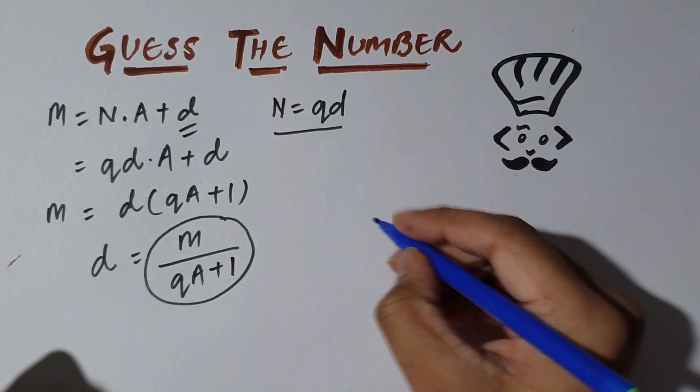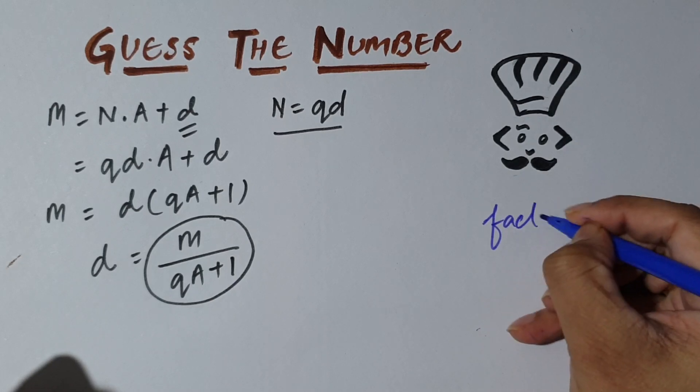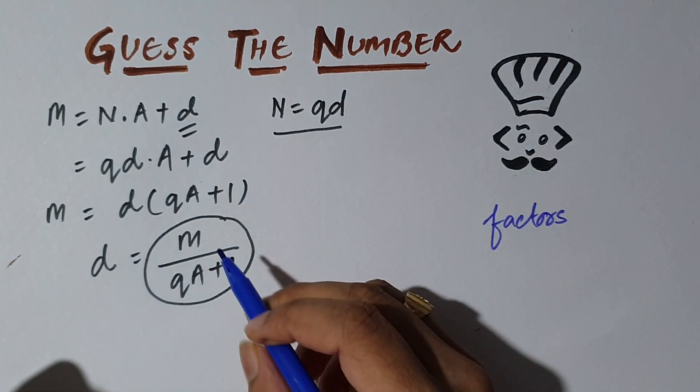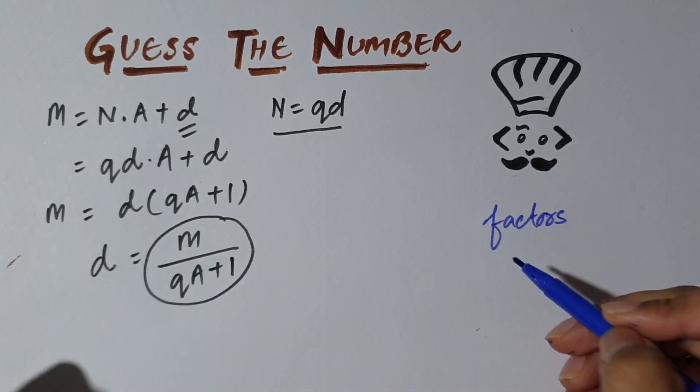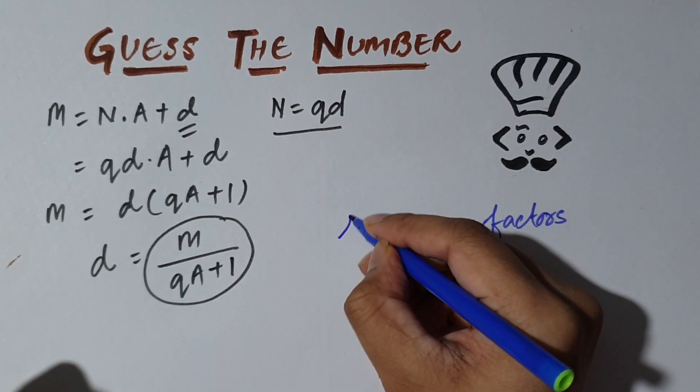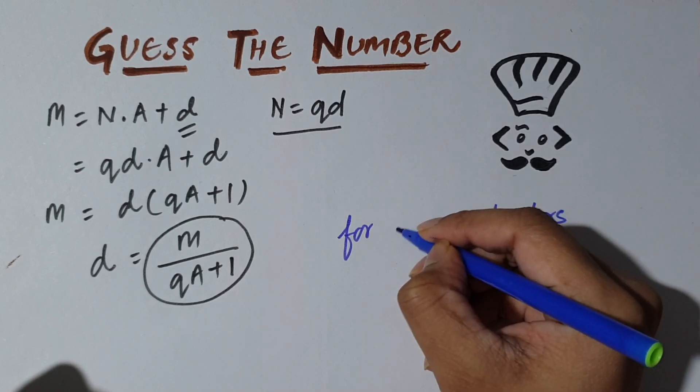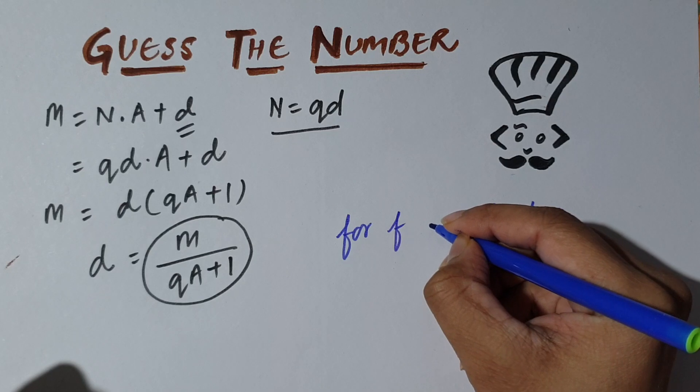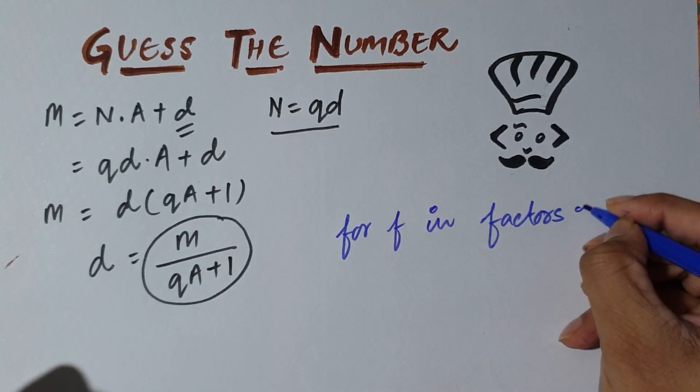So factors is that list where we have stored all the factors of M and we will now iterate over this. So for F in factors, we are now iterating over this.